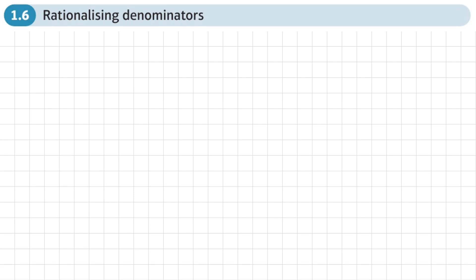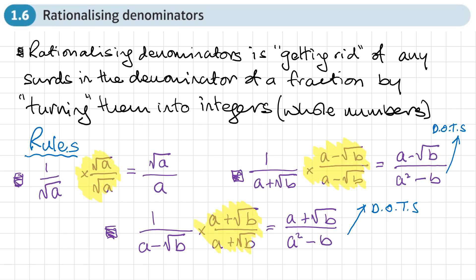This is the sixth and final section of Chapter 1, Algebraic Expressions, and this section is on rationalising denominators. Rationalising denominators is getting rid of any surd in the denominator of a fraction by turning them into integers or whole numbers. This is the method we're going to use.